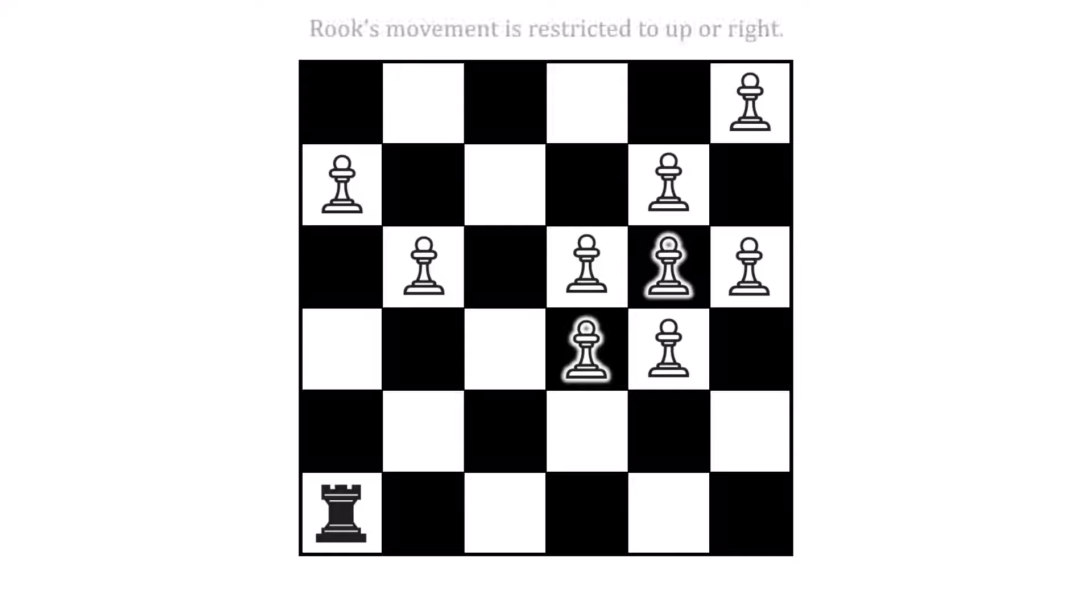The rook's moves are restricted. It can either go up or right with every move. It can't go back down, and it cannot go to the left. Other than that, the rook moves normally, and for these purposes, that means it cannot jump over pawns.